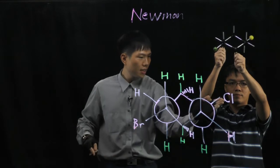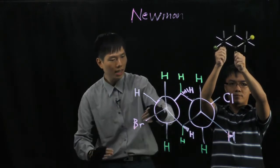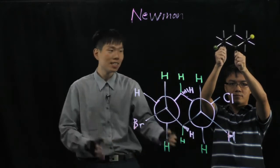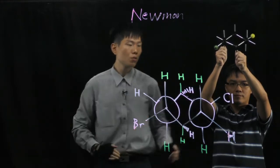Chlorine is on the equatorial position because it points to the side, and the bromine is also equatorial because it points sideways down. Since these two are up and down, they are trans to each other.